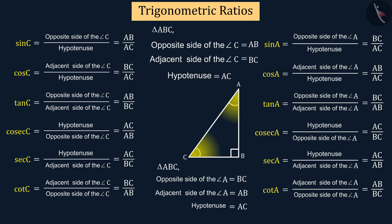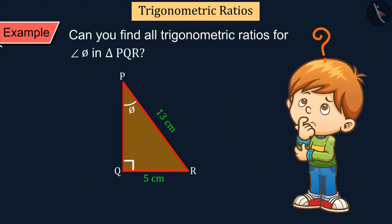If the names of the angles were not written with them, then it would be difficult to understand which ratio is written for which angle. Can you find all trigonometric ratios for angle phi in triangle PQR? Try to solve the question. We will discuss it in the next video.